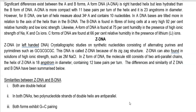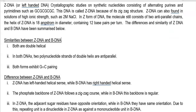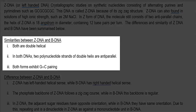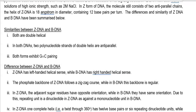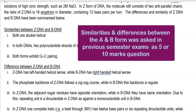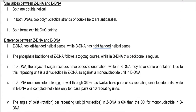The differences and similarities of Z-DNA and B-DNA can be summarized as shown below. Similarities are: both are double helical in structure and anti-parallel, and both forms exhibit G to C base pairing. This comparison is important — in a previous year exam, a question asked to write about the similarities and differences of B and Z-DNA, so you need to concentrate on this.